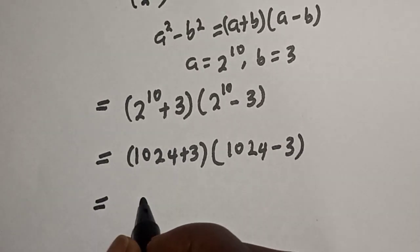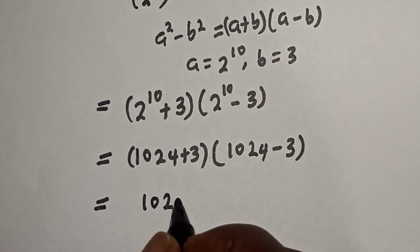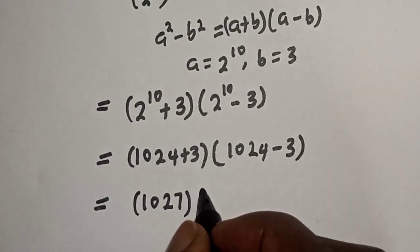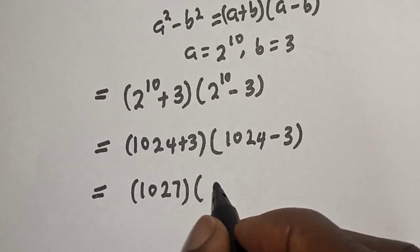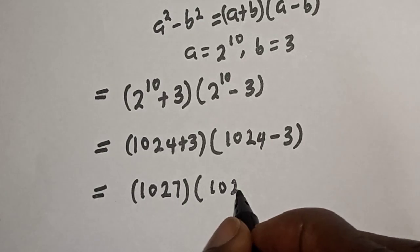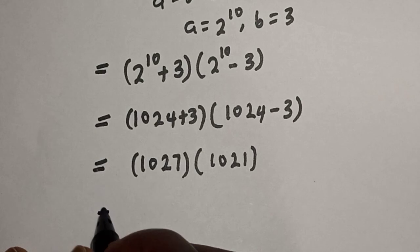This equals 1024 plus 3, which is 1027, multiplied by 1024 minus 3, which is 1021.